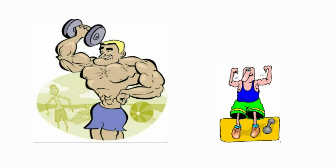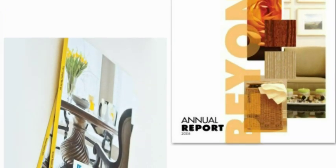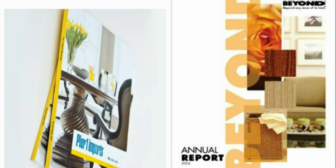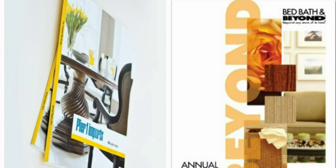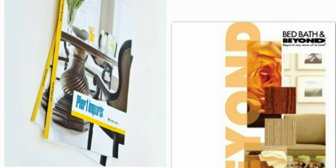We will use real life data by comparing two publicly traded companies that operate in the same industry. We will use data from the most recent annual reports from Pier 1 Imports, ticker symbol PIR, and Bed Bath & Beyond, ticker symbol BBBY, to calculate and compare their ratios.